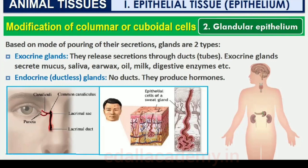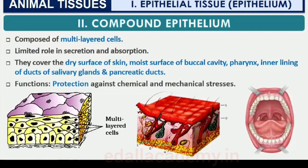Exocrine glands secrete mucus, saliva, earwax, oil, milk, digestive enzymes and other cell products, released through ducts or tubes. In contrast, endocrine glands do not have ducts; their products called hormones are secreted directly into the fluid bathing the gland. Compound epithelium is made of more than one layer of cells and has a limited role in secretion and absorption. Their main function is to provide protection against chemical and mechanical stresses.